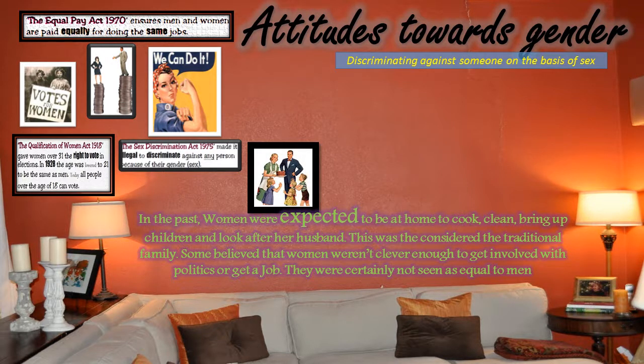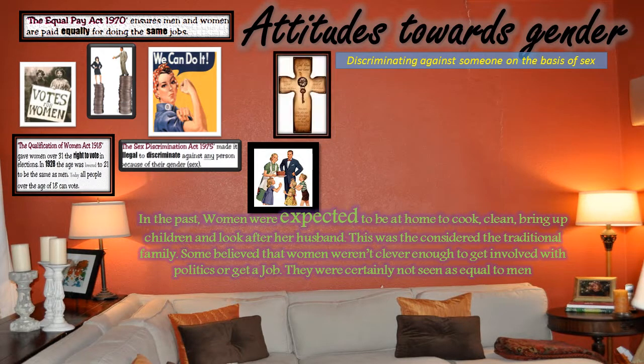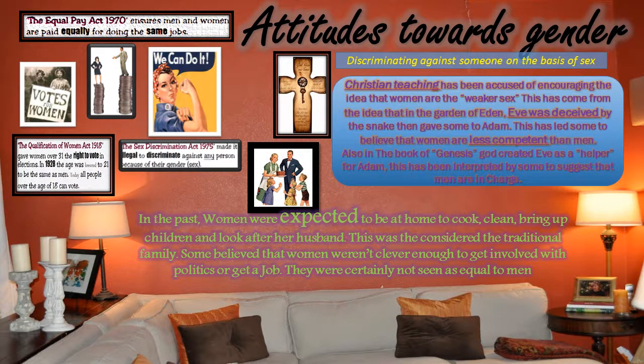In the past, women were expected to be at home to cook, clean, bring up children and look after their husband — this was considered the traditional family. Some believed women weren't clever enough to get involved with politics or get a job, and they were certainly not seen as equal to men. Within Christianity, it could be argued that certain teachings have encouraged the idea that women are the weaker sex. In the Garden of Eden, Eve was deceived by the snake, leading some to believe women are less competent than men. In Genesis, God created Eve as a helper for Adam, which some interpret to mean men are in charge and women must do as they're told.